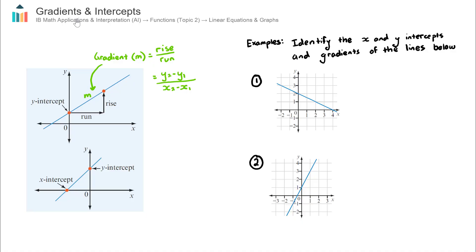This video covers the concept of gradients and intercepts of linear lines, an important concept in IBMaths.ai found in topic 2 functions under the subtopic of linear equations and graphs. Here we have a couple of diagrams on the left hand side. These are pretty easy concepts to grasp, though it gets a little bit difficult if the gradient is hard to calculate or the intercepts aren't listed. But before we get into that, let's just recap the real basics.